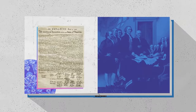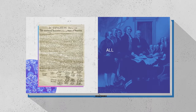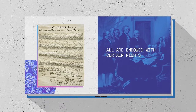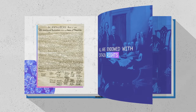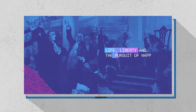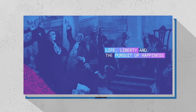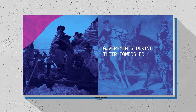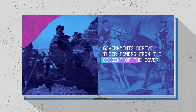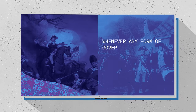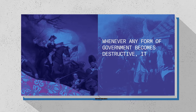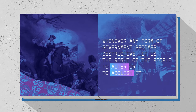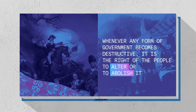As the Declaration of Independence describes: all men are created equal, that they are endowed by their creator with certain unalienable rights, that amongst these are life, liberty, and the pursuit of happiness. That to secure these rights, governments are instituted among men, deriving their just powers from the consent of the governed. That whenever any form of government becomes destructive of these ends, it is the right of the people to alter or to abolish it and to institute new government.